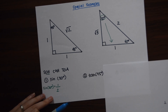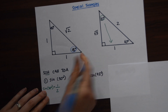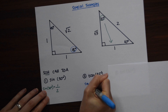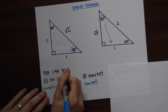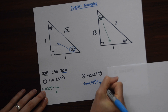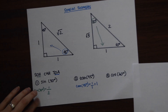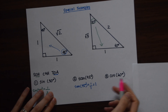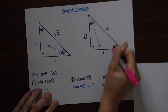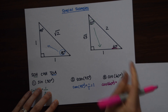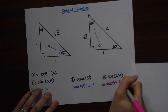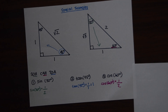For tan of 45, focusing on 45 degrees, tan equals opposite over adjacent. The opposite is 1 and the adjacent is also 1, so tan of 45 equals 1. For cosine of 60 degrees, cosine equals adjacent over hypotenuse. The adjacent is 1 over the hypotenuse of 2. So cosine of 60 equals one half.